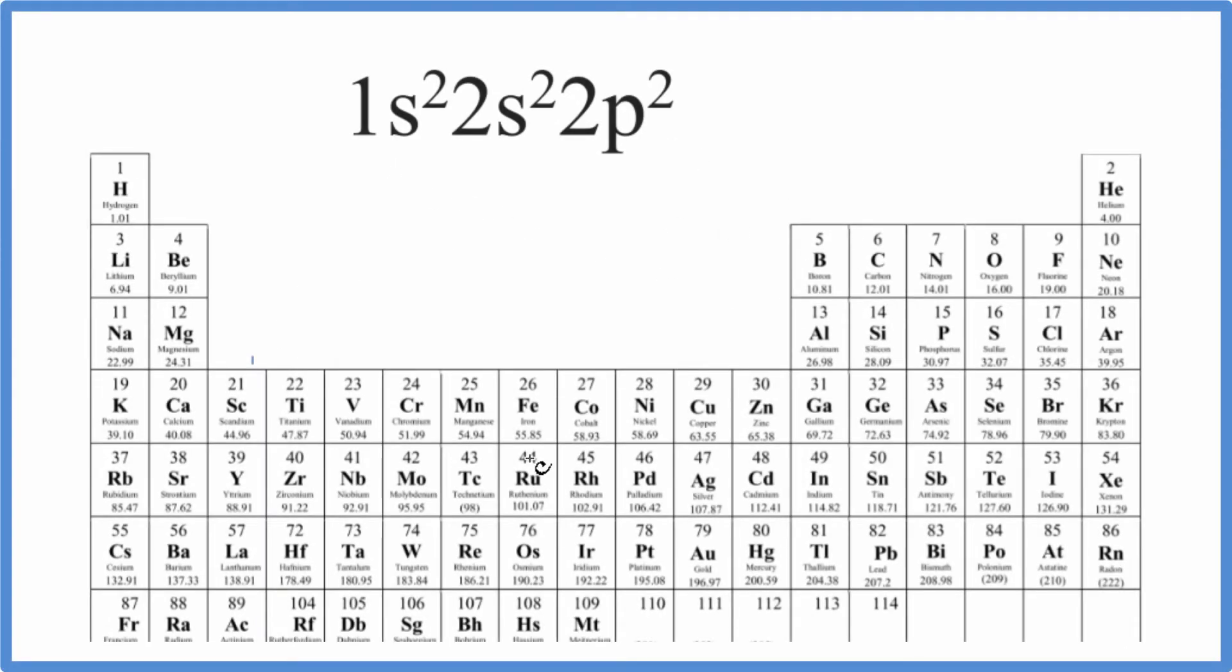In this video, we'll find the element on the periodic table that has the electron configuration 1s2, 2s2, 2p2. There are two ways we can do this.